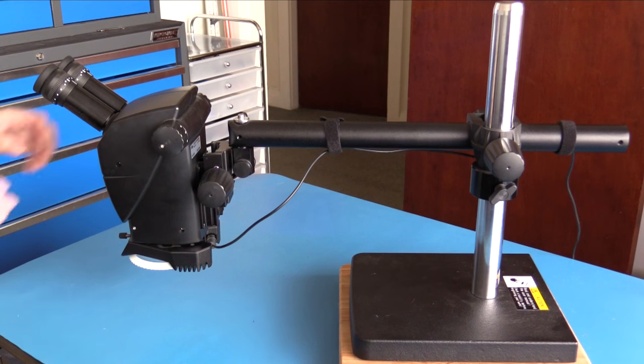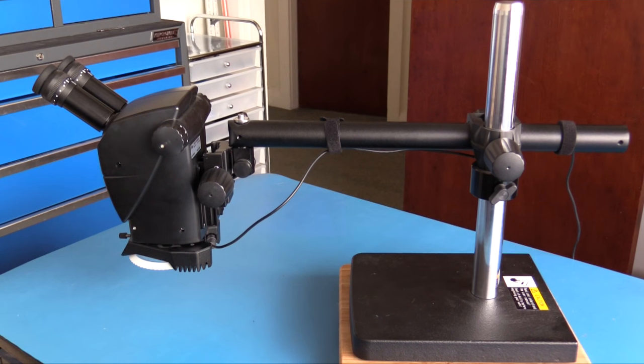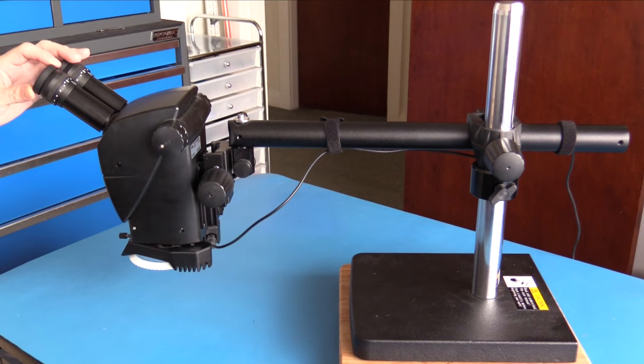This microscope's eyepieces provide interpupillary adjustment as well as a dioptic setting to compensate for the difference in vision between your two eyes. There are also rubber cups on the eyepieces for those who need to wear glasses.